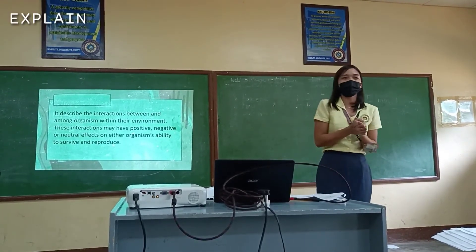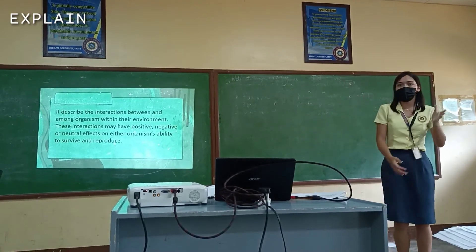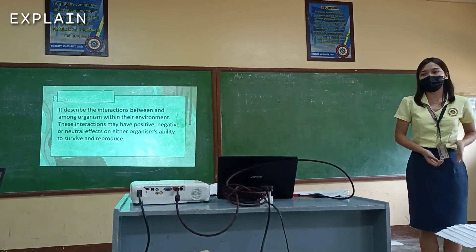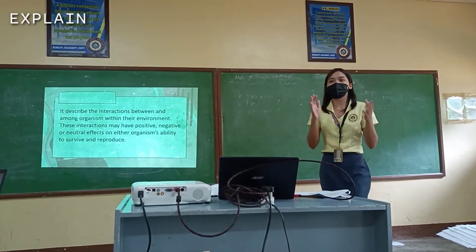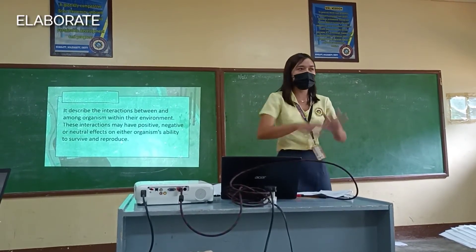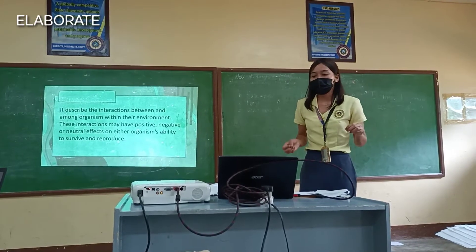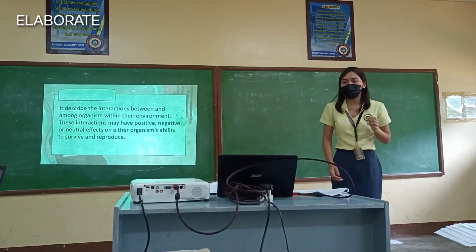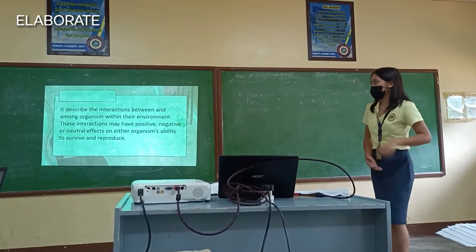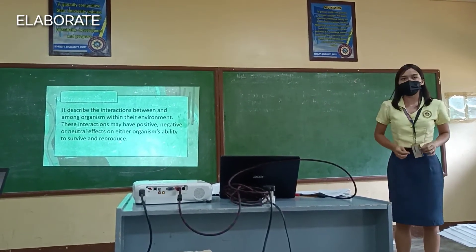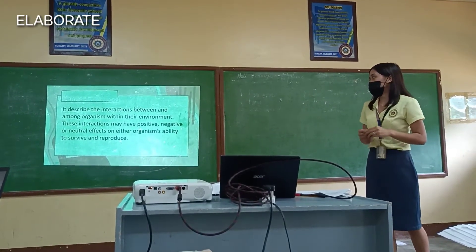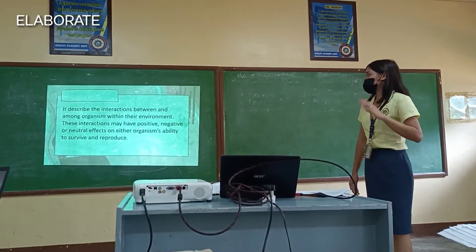Okay, is everybody finished? Group one will now present their work, followed by the other groups. Class, let's give ourselves a round of applause for amazing and excellent work. You have demonstrated and described the five ecological relationships. These relationships describe the interactions between and among organisms within their environment, and may have positive, negative, or neutral effects on the organisms' ability to survive and reproduce.